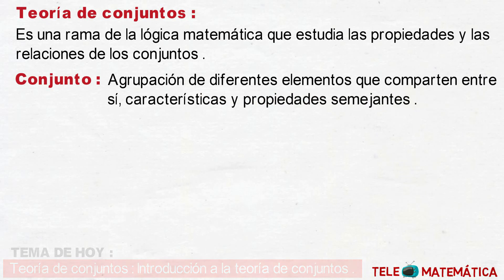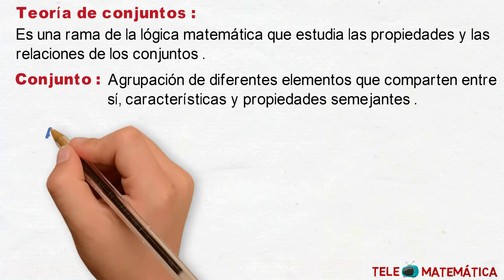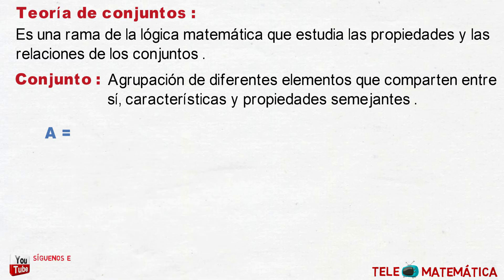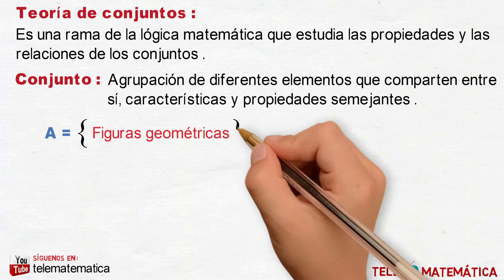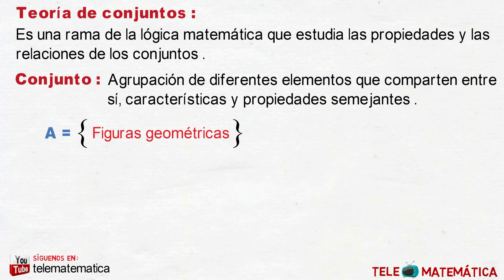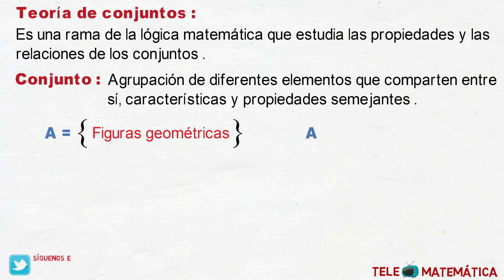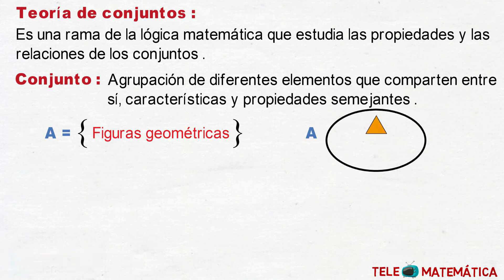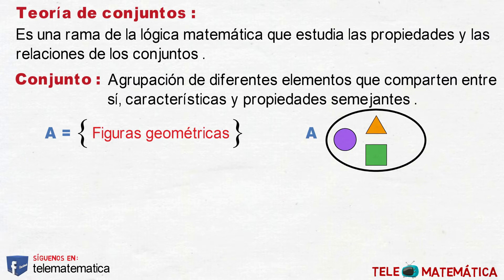Por ejemplo, tenemos el conjunto A, que se denota con una letra mayúscula, definido por figuras geométricas. Y que gráficamente sería el conjunto A, y en él tenemos un triángulo, un círculo, un cuadrado y un rectángulo.